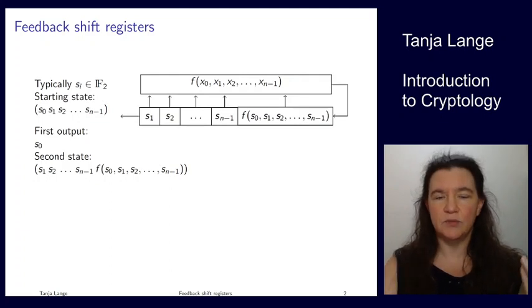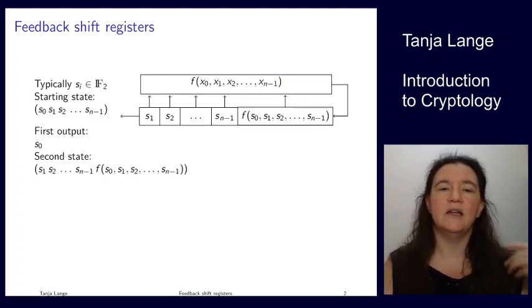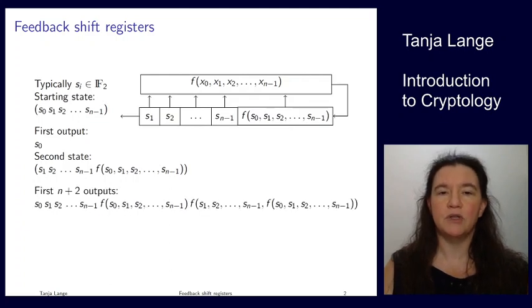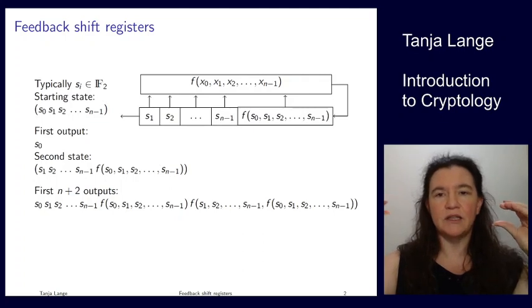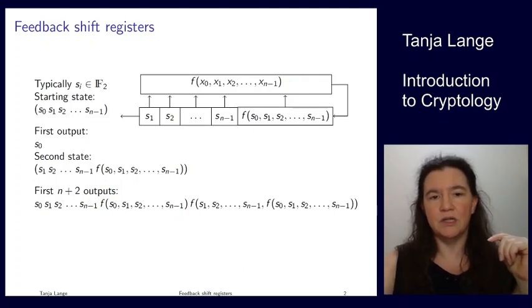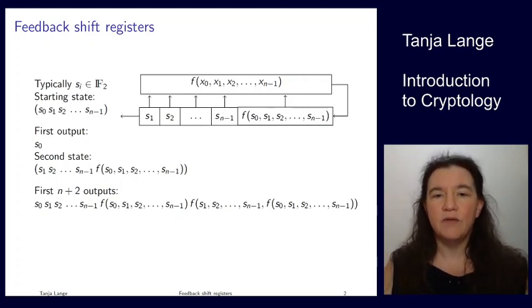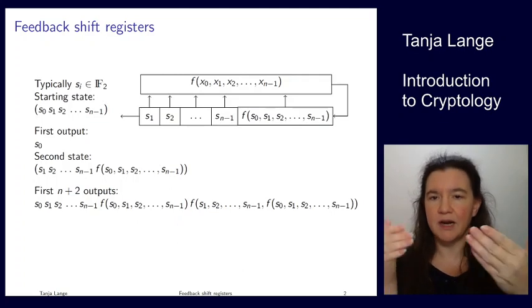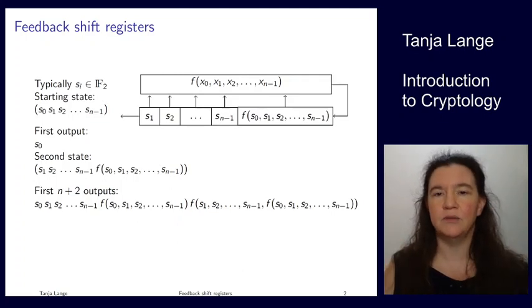So the second state is what you see in the picture and then at every moment we output something. So the first n outputs are just what you have in the initial states s0, s1, s2, sn minus 1. And afterwards we output the function that is currently in the last position of the register.